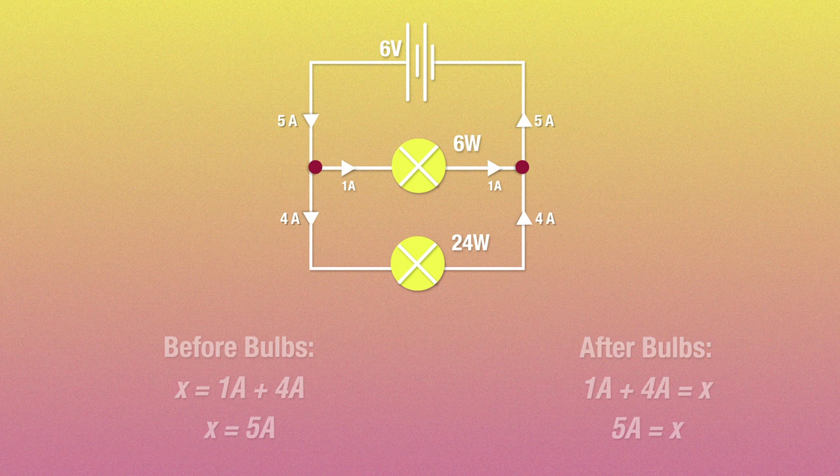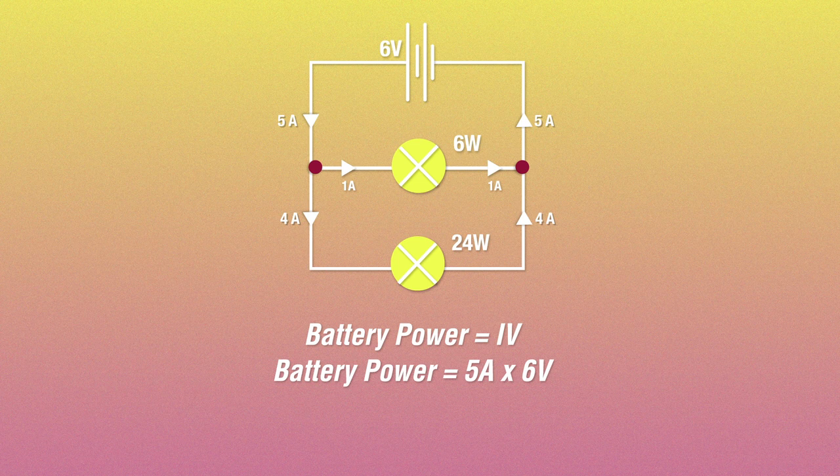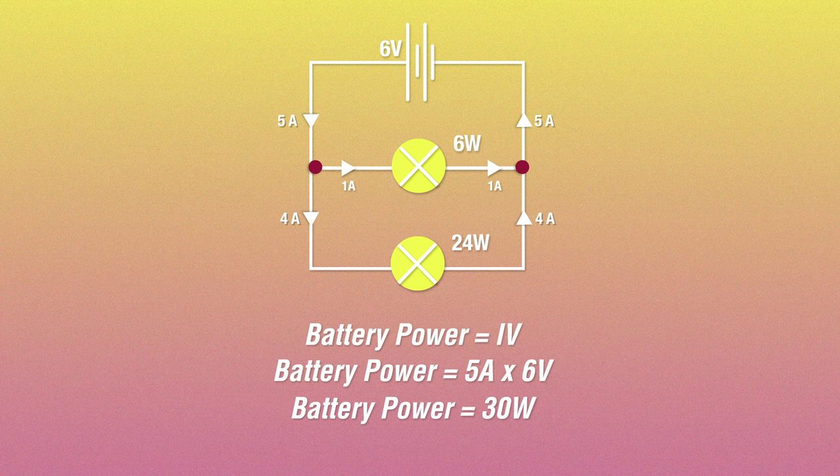Great! We know the voltage, 6 volts, and we know the current, 5 amperes. Now we use the power equation to get the net power, which is 30 watts. And if you think about it, this makes sense, because the total power given must be equal to the power consumed. And 24 watts plus 6 watts is 30 watts. So yeah, problem solved. Mission accomplished.